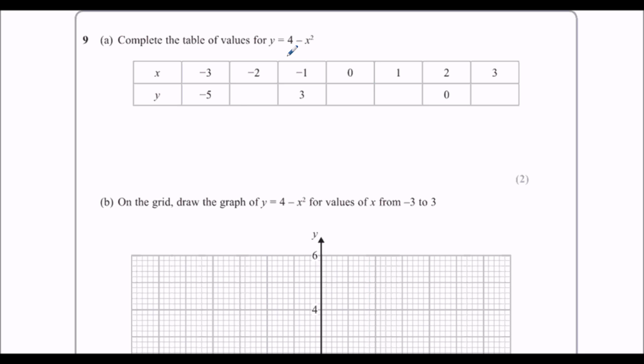We've got 4 minus x squared. So it's 4 minus, and then put your number in the bracket, and then squared. So 4 minus x, whatever x is, squared.